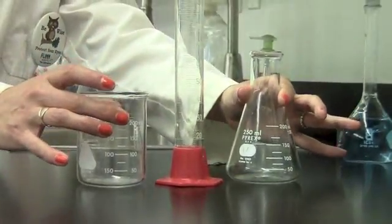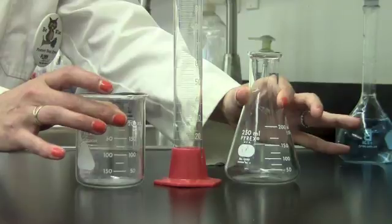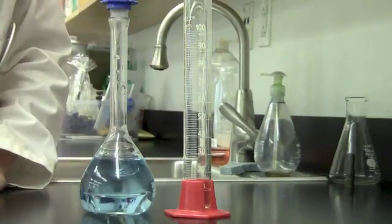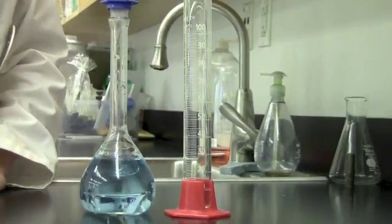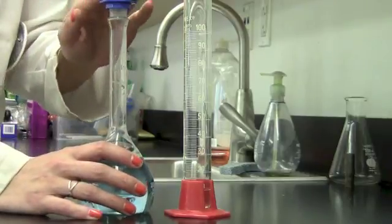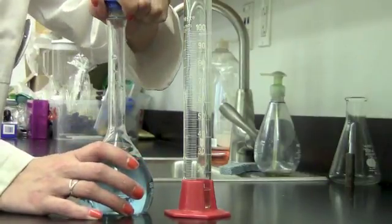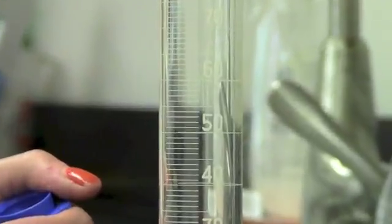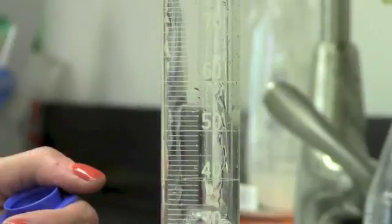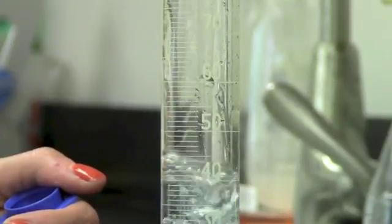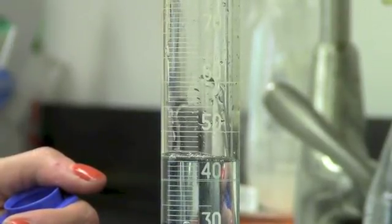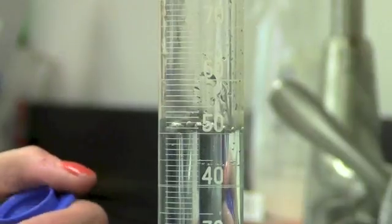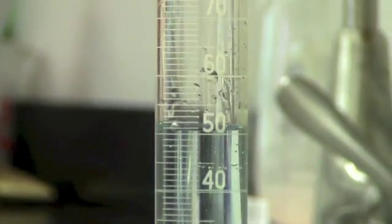Beakers and flasks are only to contain liquids we've already measured. Our lab procedure tells us to measure out 50 milliliters of copper chloride solution. So here's my stock bottle of copper chloride solution. I'm going to take the lid off. I'm going to carefully pour until I'm at about the 50 milliliter mark. You can pour a little more quickly at first and then slow down as you get close. I'm going to now put the lid back on my stock bottle.